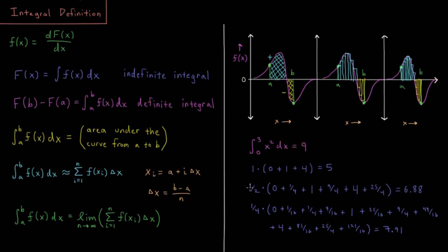If we approximate with rectangles of width one half, we get these six values for our function regions there. If you add up all those rectangles, you get a value of six point eight eight, which is better, but still not great.